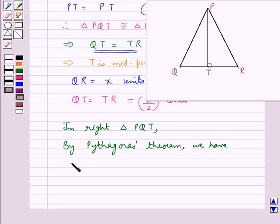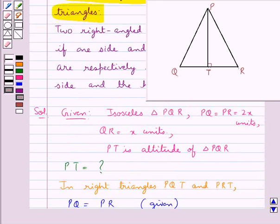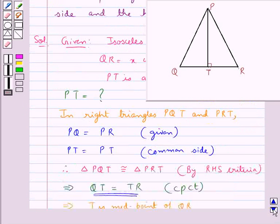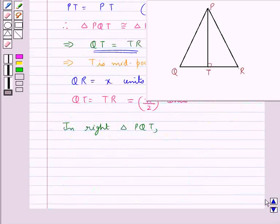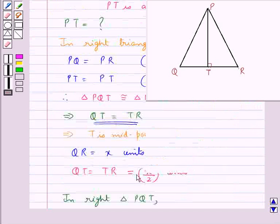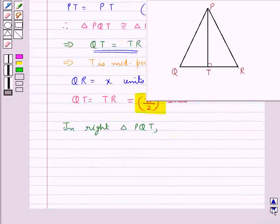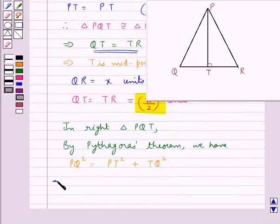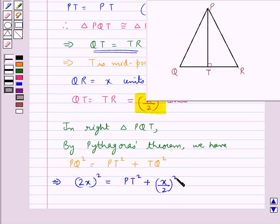we have PQ² = PT² + TQ². We are already given that PQ = 2x, then QT = x/2. So we have that (2x)² = PT² + (x/2)².